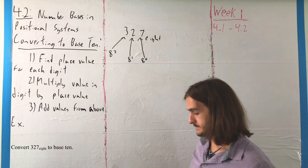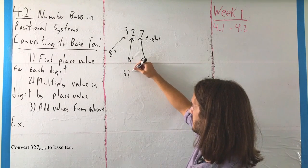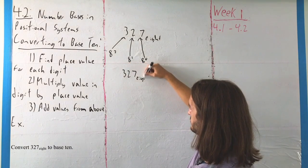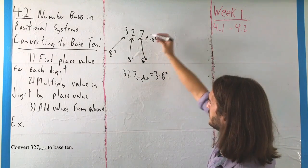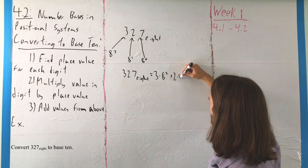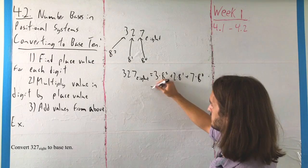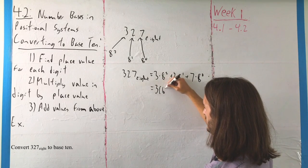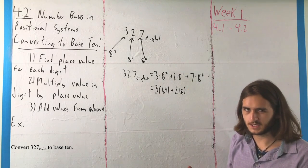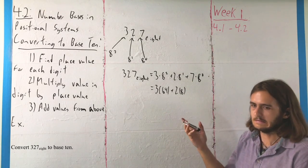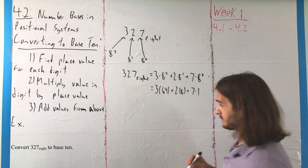From there, we want to actually be able to make this conversion. We have in there 3, 8 squareds, plus 2, 8 to the firsts, plus 7, 8 to the zeroes, which ends up being 3 times 64, plus 2 times 8, and I'm sorry about my handwriting, I usually apologize for this earlier, but sometimes even I forget until I actually start to look at it, then 7 times 1.